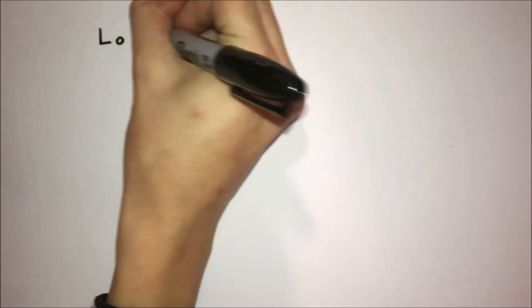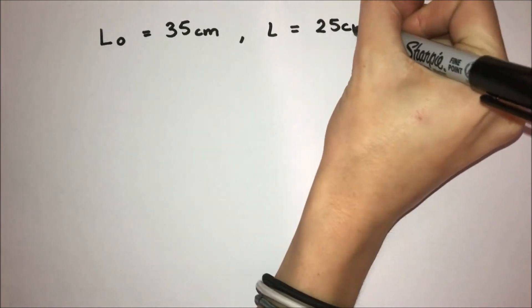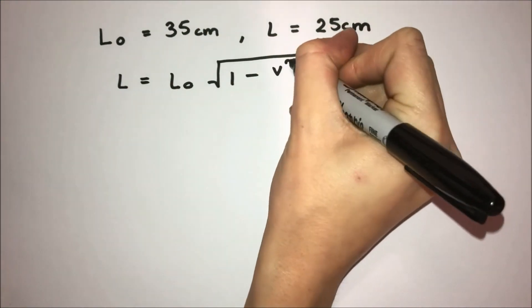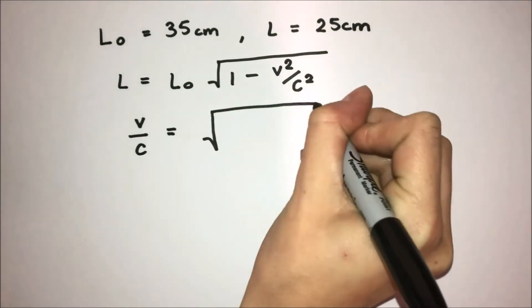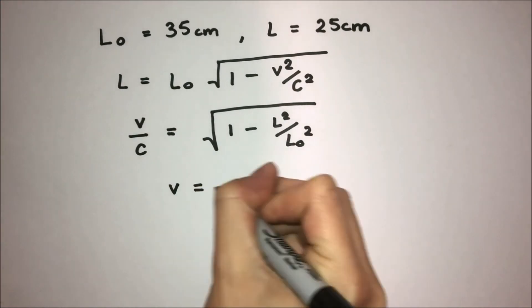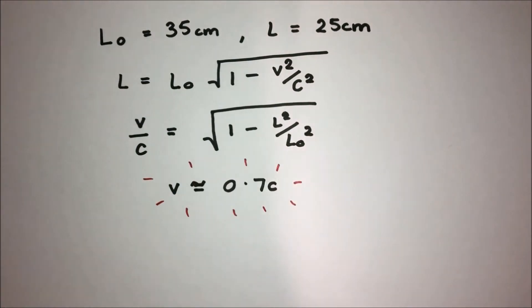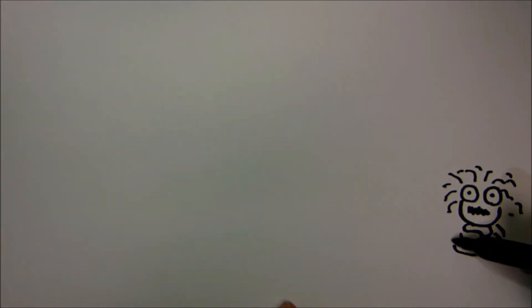Going back to the coke, how fast would you need to throw the bottle? We measure L0 to be 35cm and L to be 25cm. So rearranging for V over C, it turns out you would have to throw the bottle at 0.7 times the speed of light for it to contract by that amount. Good luck! But really, how often are you throwing coke bottles at 70% of the speed of light? What's an actual example of special relativity being displayed in the real world?